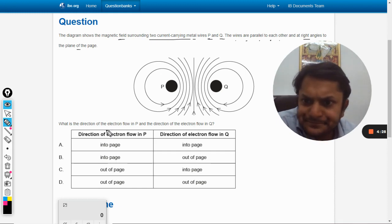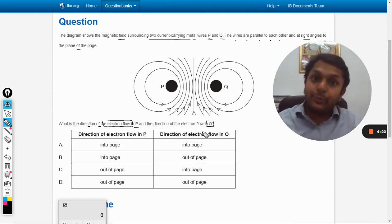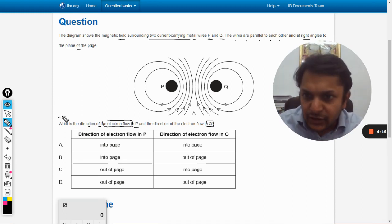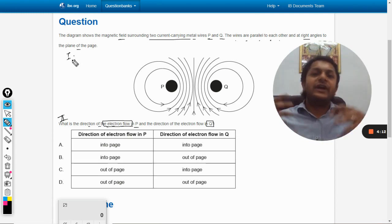Now in this question, what is the direction of electron flow in P and the direction of electron flow in Q? That will be opposite to the direction of the flow of the current. So this is the second part of the problem. The first part is we need to find the direction of the current. Electron we will see later.